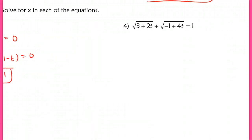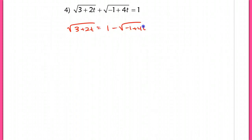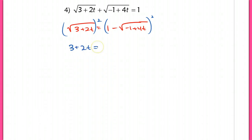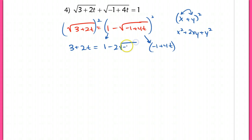For problem number 4, this is a radical equation. Remember, you want to isolate your radical. So I'm going to isolate the √(3 plus 2t) radical. I move this over and then square both sides. I've dropped the radical now, so it's 3 plus 2t on the left. On the right-hand side, I'm going to use that pattern — when we FOIL this, you take the first term and square it, take the last term and square it, and the middle term is double the product of the two terms (2xy). So here I take the first term 1, the last term which is (negative 1 plus 4t), and the middle term is negative 2 times (negative 1 plus 4t).